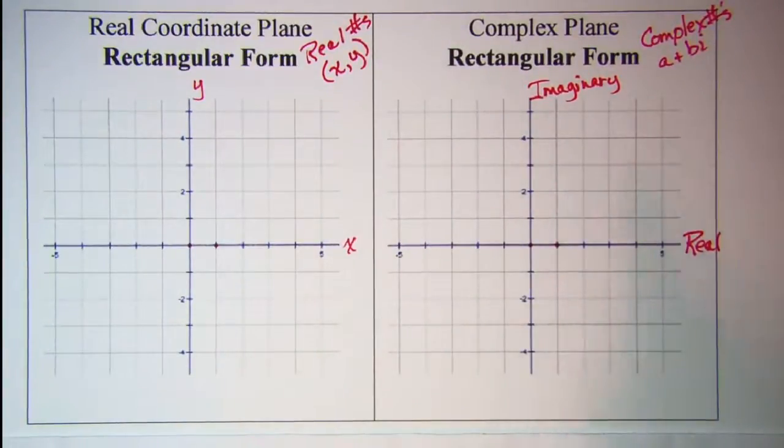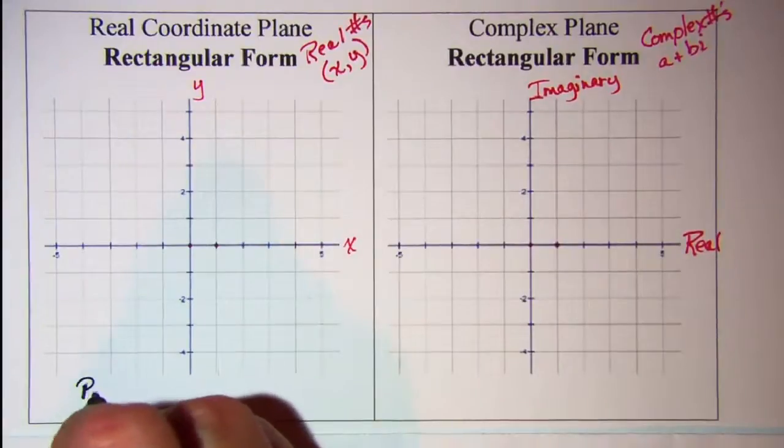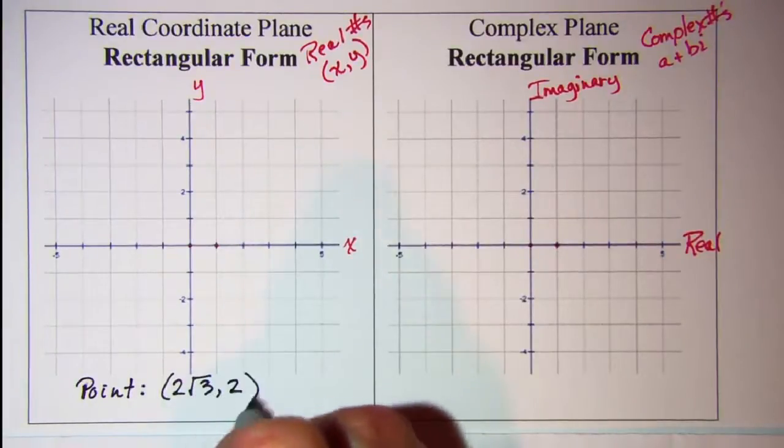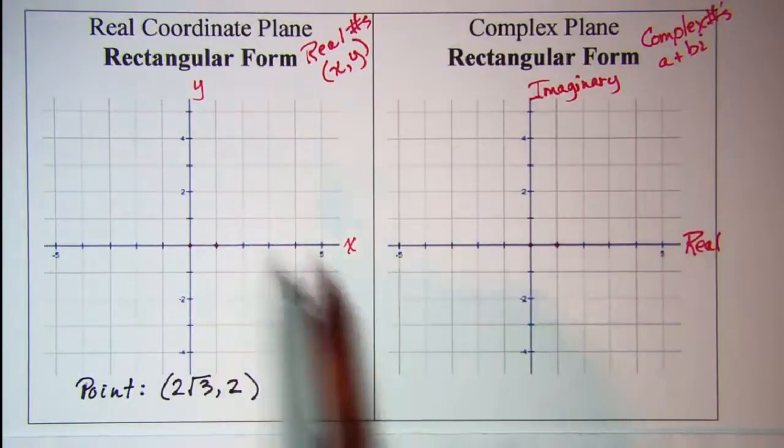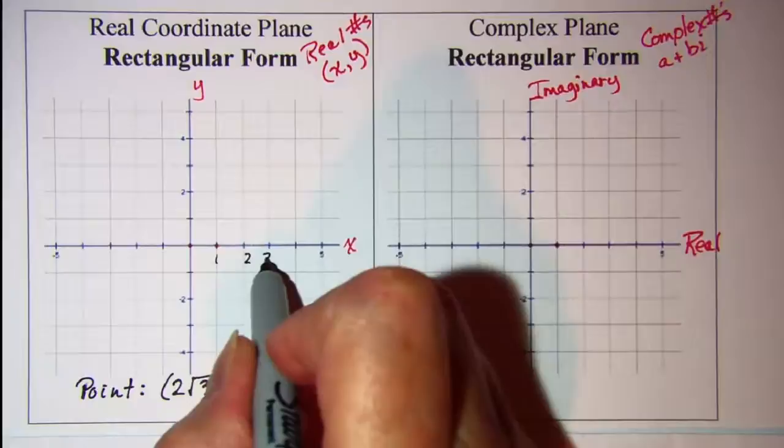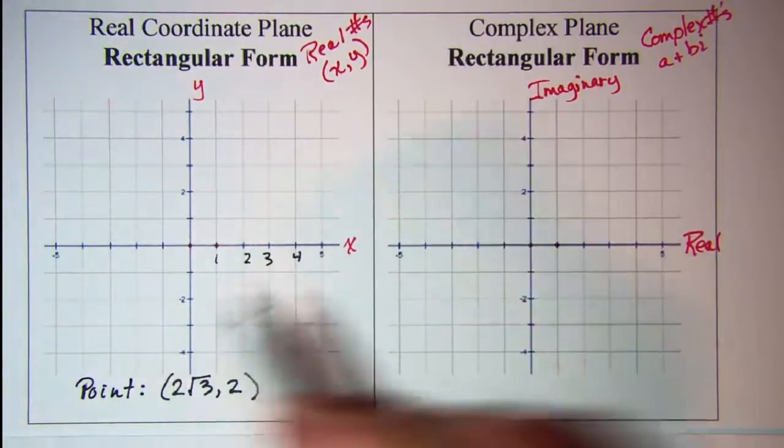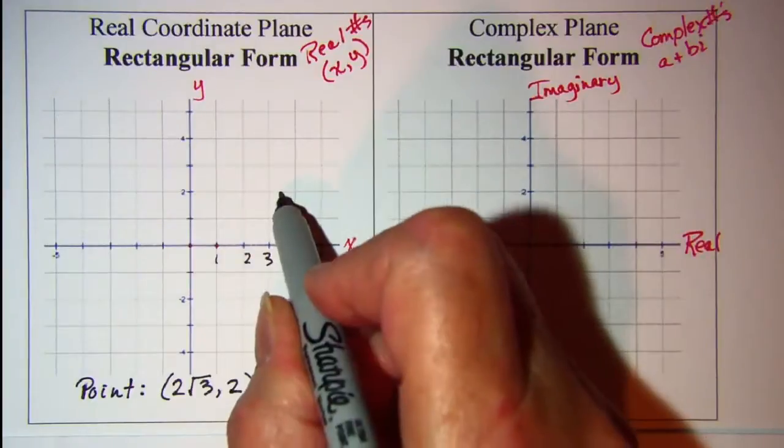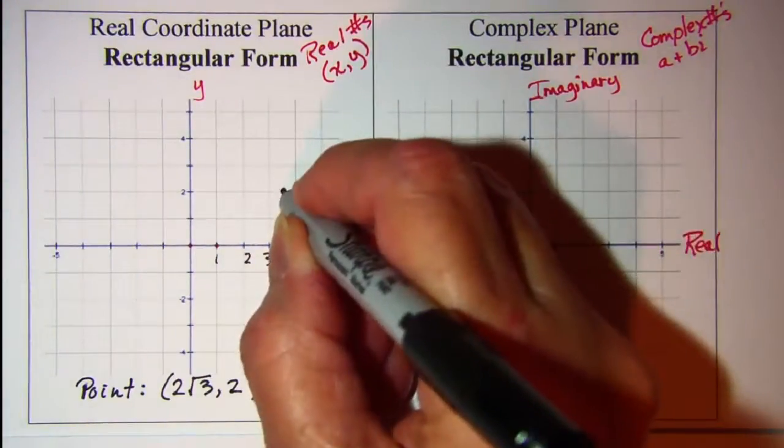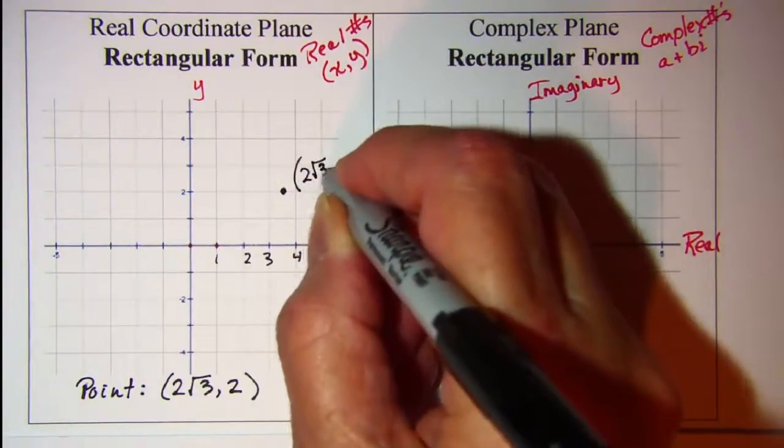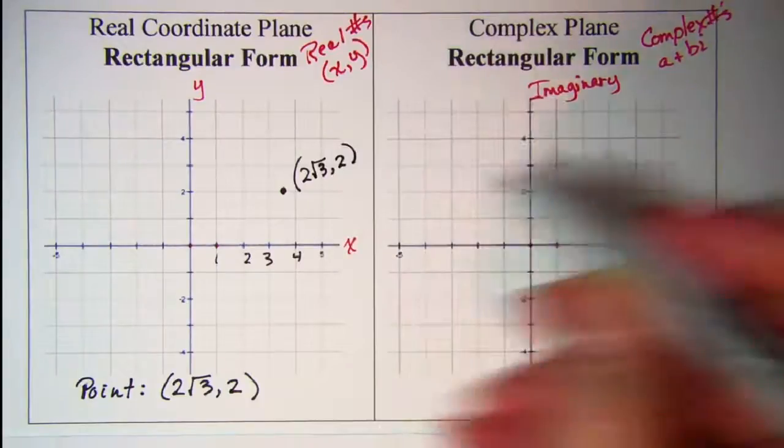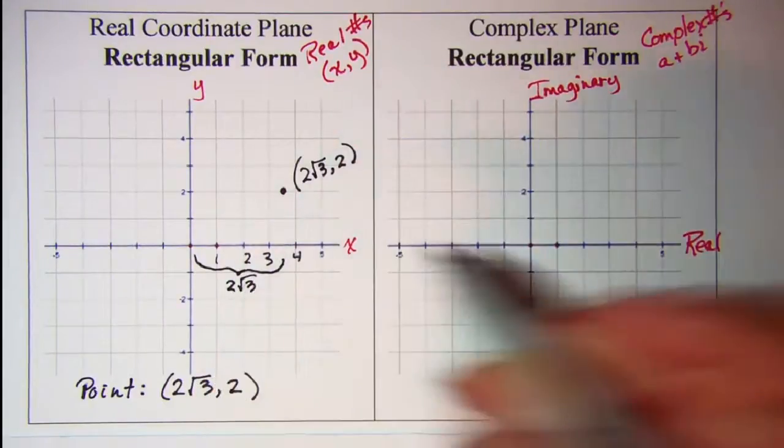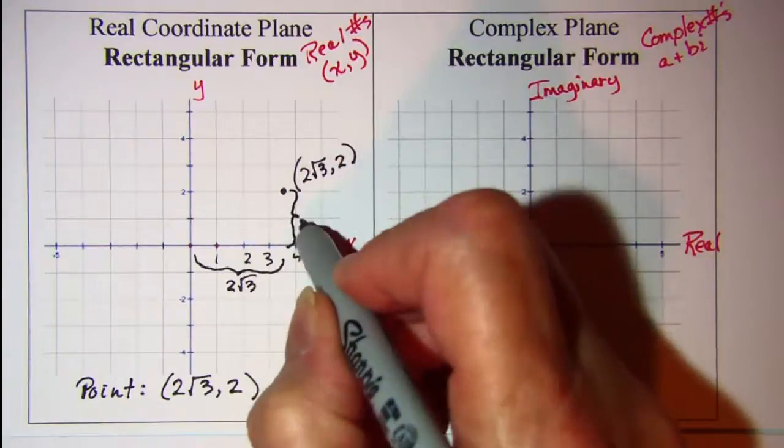Now if we had a point, say our point was (2√3, 2), I would need to—so 2√3 is about 3 and a half—so I'll go right 3 and a half and up 2 and that'll be my point.